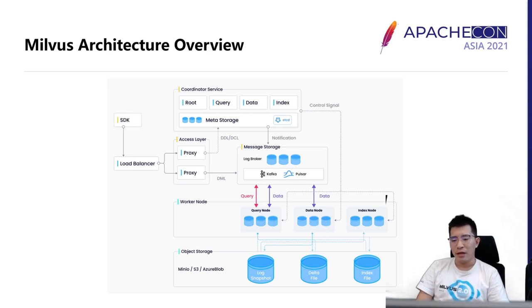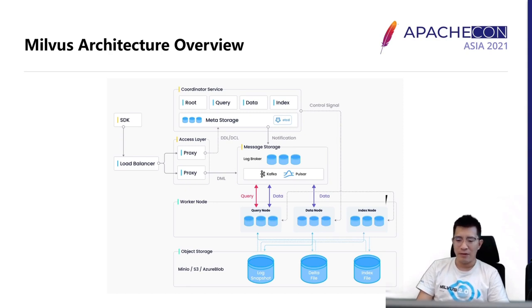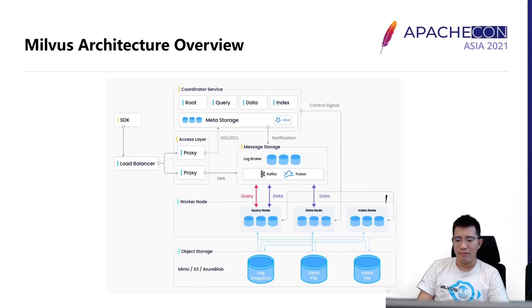We have a unified abstraction of meta storage, message storage, and object storage. Every dependency is just a plugin. For instance, message storage can be either Pulsar or Kafka, and the object store can be implemented by S3, MinIO, or JuiceFS.